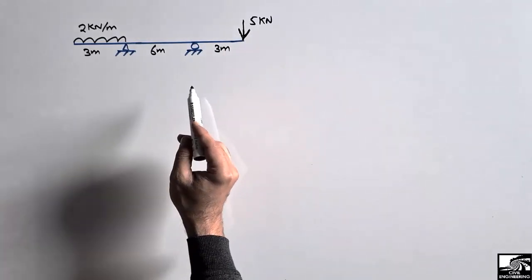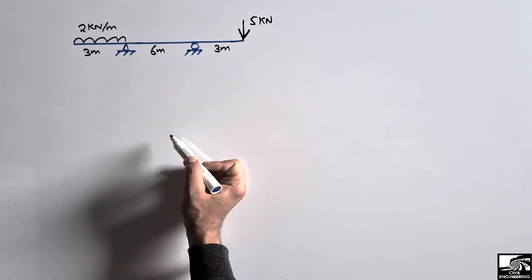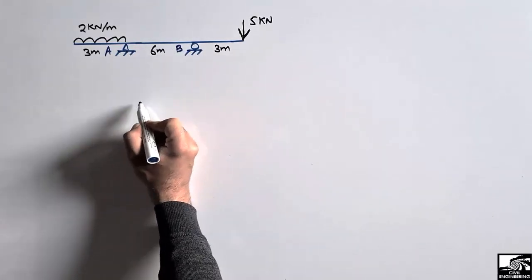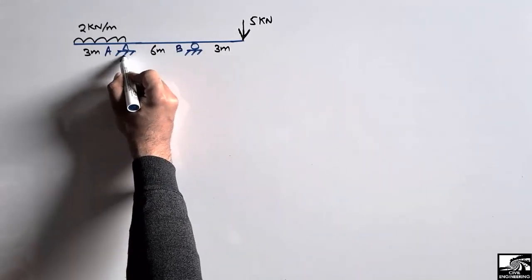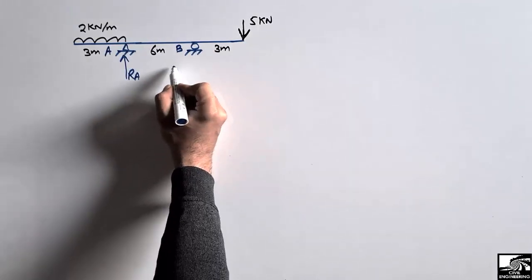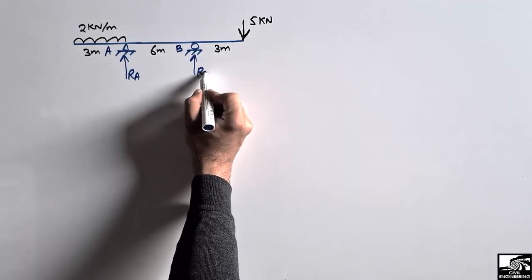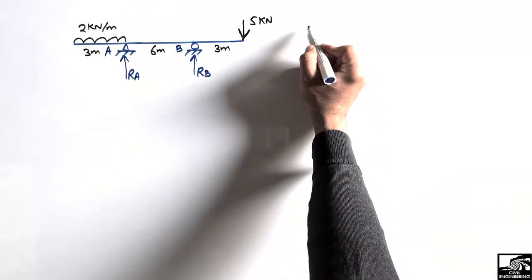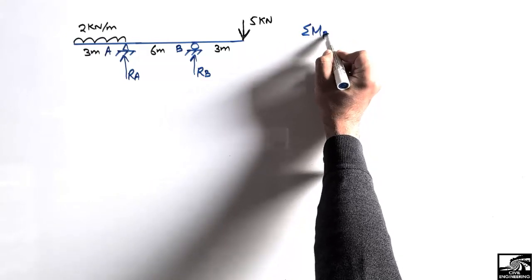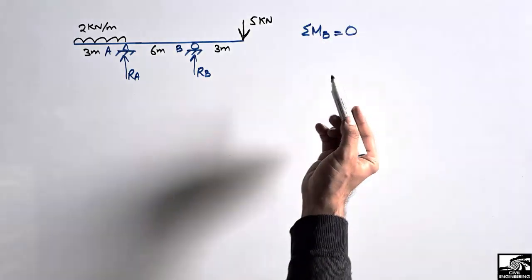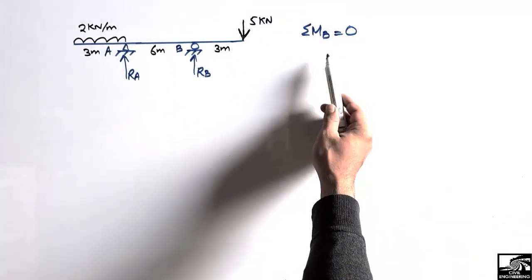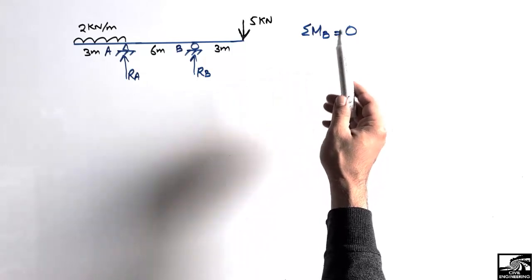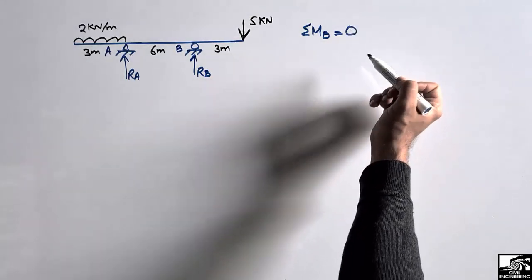We have to find the support reactions first, and then we can draw the shear force and bending moment diagram. Let's consider this is point A or support A, and this is support B. They have reactions in the upward direction: RA and RB. To find the support reactions, we take the summation of moments at any point equal to zero. Let's suppose summation of moments at point B is equal to zero. We can use this equilibrium equation — summation of moments, summation of vertical forces, or summation of horizontal forces equal to zero.